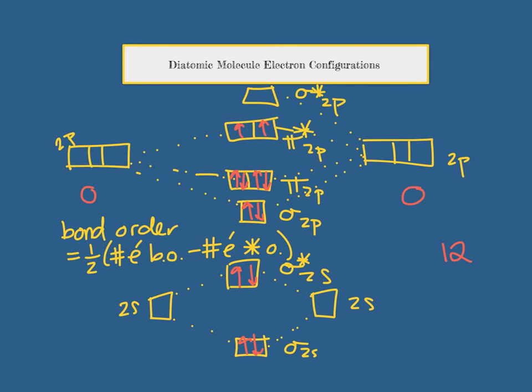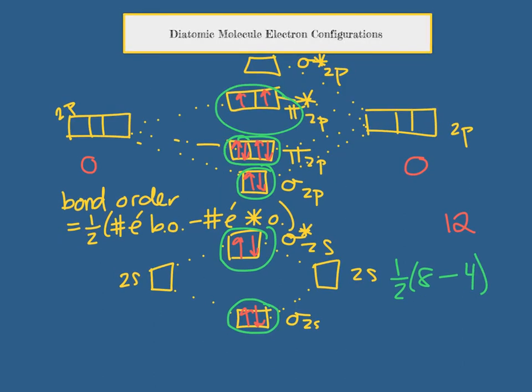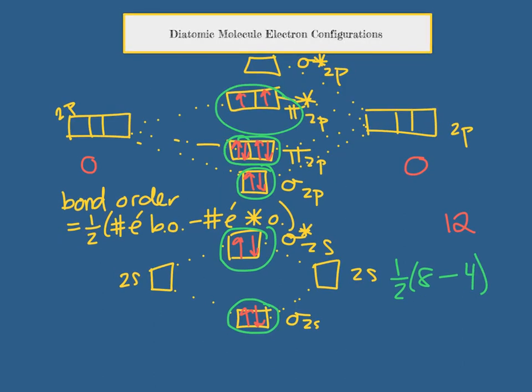And that number should tell you how many bonds you have. For oxygen, we know it's 2 from valence shell electron pair repulsion theory. But in MO theory, we know that we have, let's see how many bonding, 1, 2, 3, 4, 5, 6, 7, 8 electrons there. And how many non-bondings? 1, 2, 3, 4. What's 8 minus 4? 4. What's 4 divided by 2? 2 for our bond order.